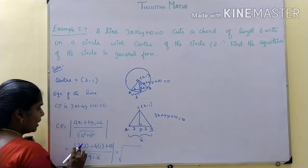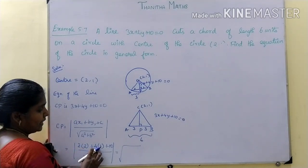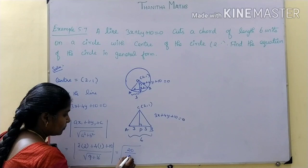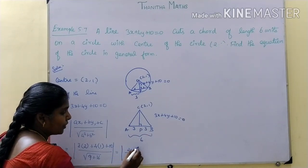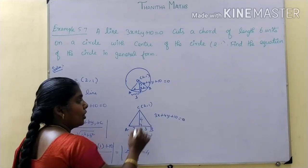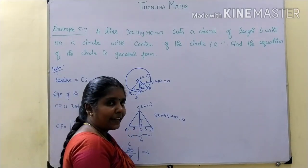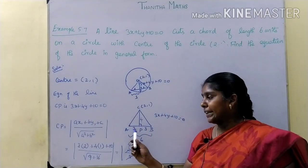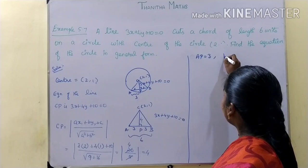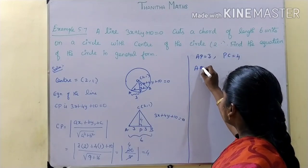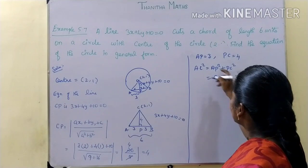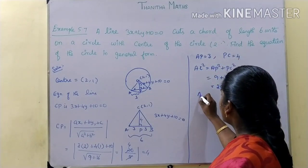Calculating: 6 plus 4 plus 10 equals 20. Root of 9 plus 16 equals root of 25 equals 5. So CP equals 20 divided by 5 equals 4. Now applying the right-angle triangle: AP equals 3 and PC equals 4. AC squared equals AP squared plus PC squared equals 9 plus 16 equals 25. So AC equals 5, which is the radius of the circle.